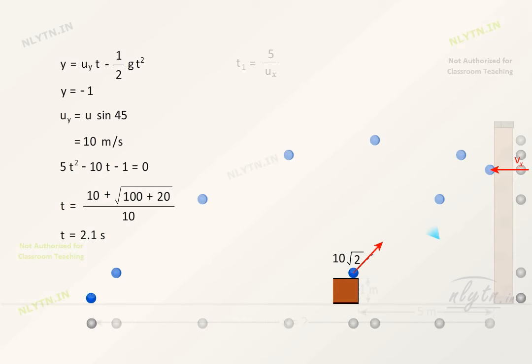Now, the time taken to hit the wall will be equal to the distance divided by the horizontal speed. That is 5/10 m/s, which equals 0.5 seconds.